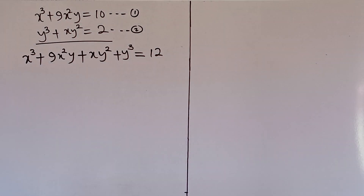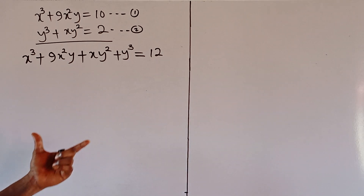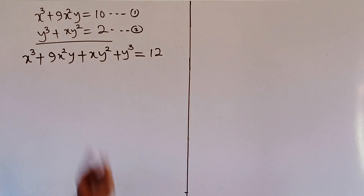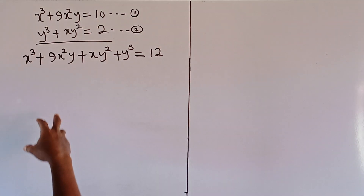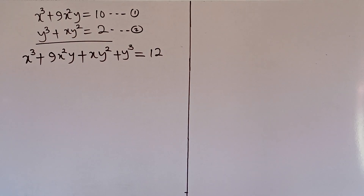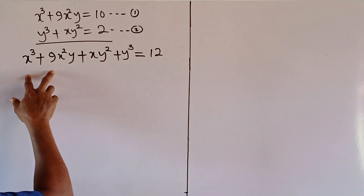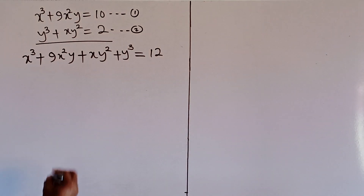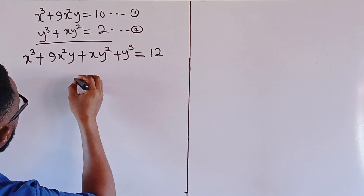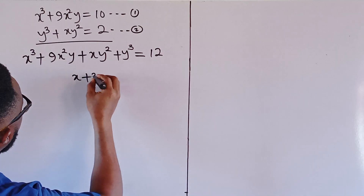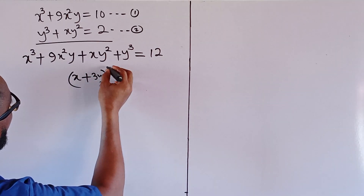This equation is not really of any help in solving this problem, but it is just to give us a head start. If you look carefully at the pattern of the expression, you will see that the powers of x are decreasing while the powers of y are increasing. And from the first two terms, you can tell that this should be the binomial expansion of x plus 3y, whole cubed.